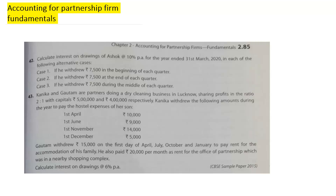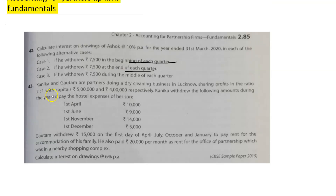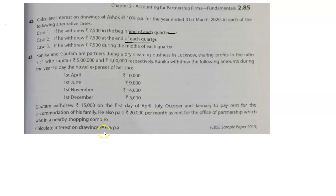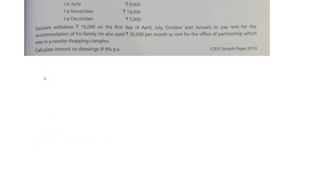Let's start with question number 42: Calculate interest on drawing of Ashok at the rate of 10% per annum for the year ended 31st March 2020 in each of the following alternative cases. Three cases are given. First case: if he withdraws ₹7,500 at the beginning of each quarter. Second case: if he withdraws ₹7,500 at the end of each quarter. Third case: if he withdraws ₹7,500 in the middle of each quarter. We will start with Case 1.